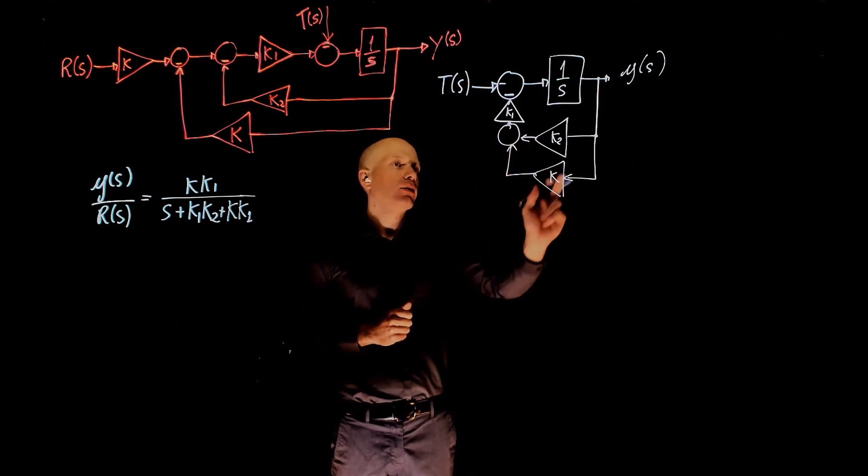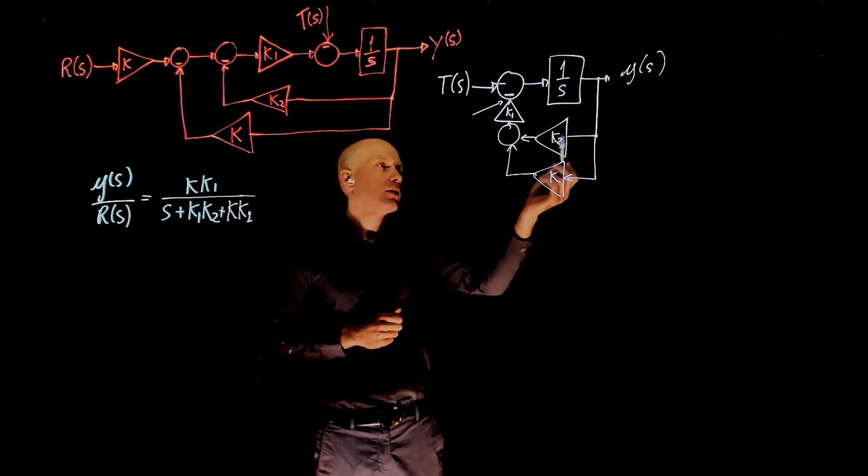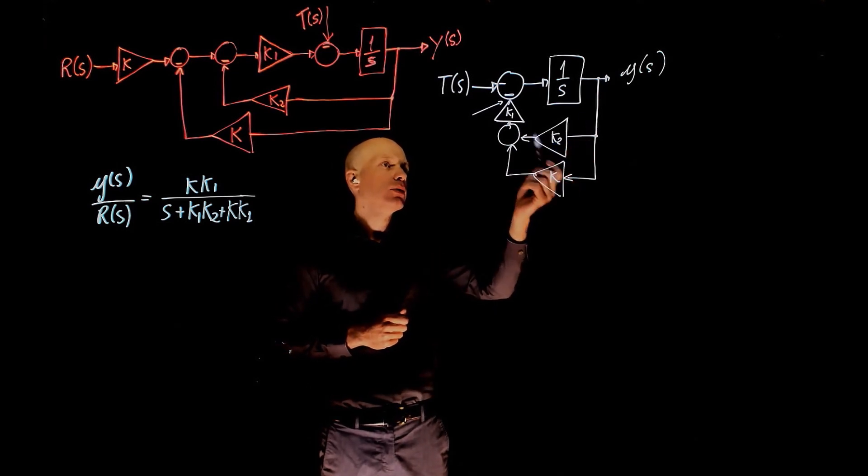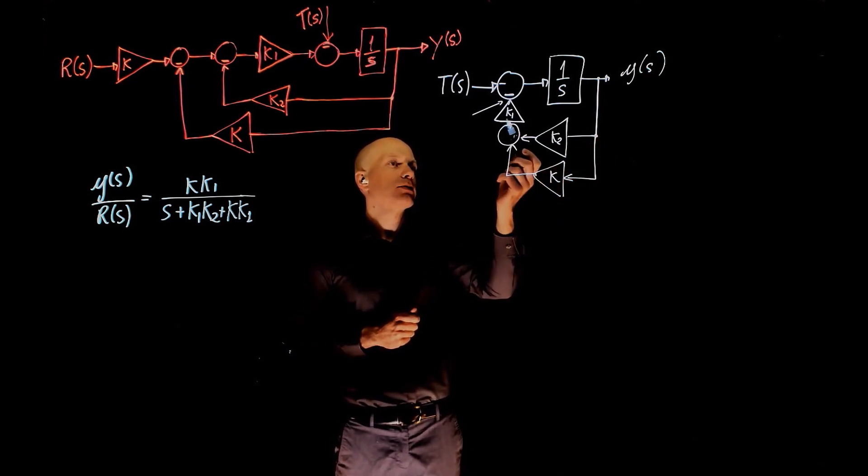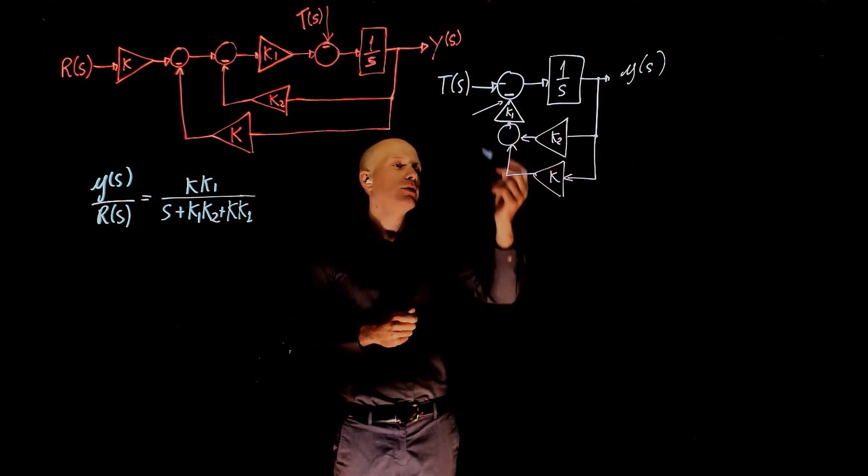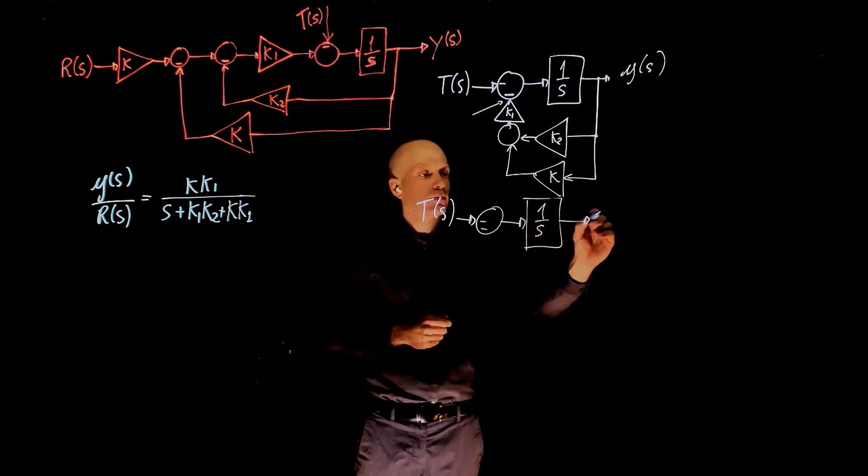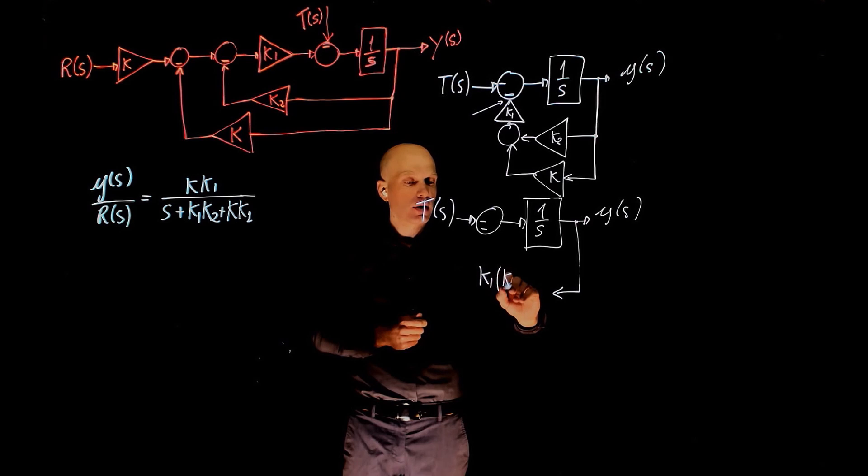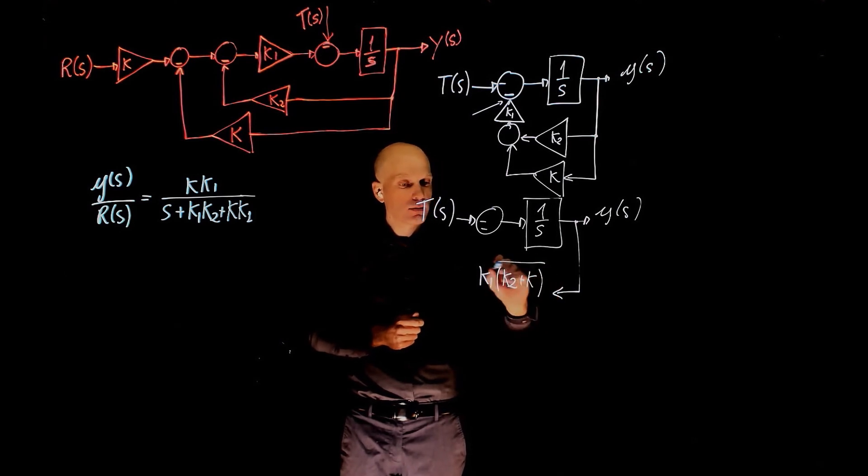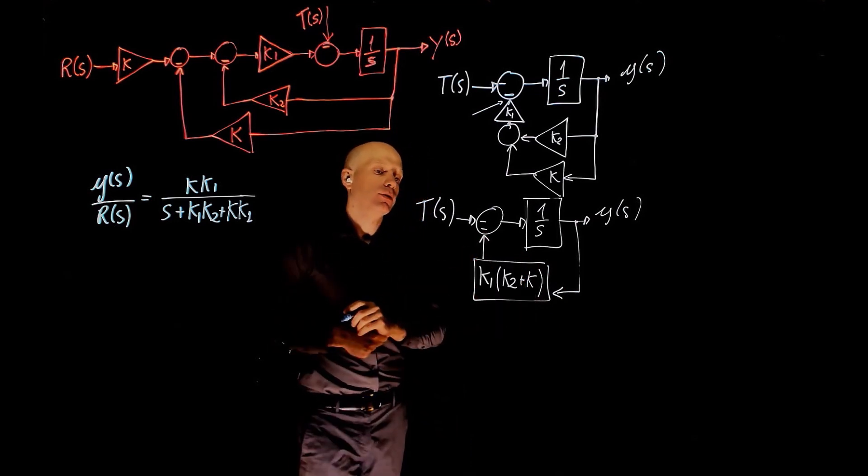We see that this part of the block diagram can be simplified. The sum there takes y times k2 times k1 minus y times k times k1. So this feedback loop can be simplified with one single function that is k1 times k2 plus k, and this is what goes to the feedback.